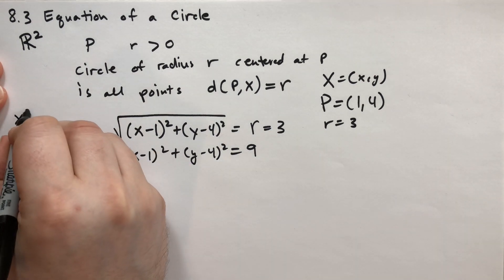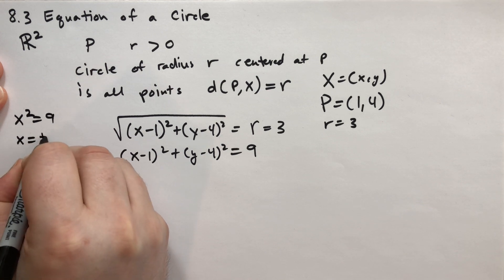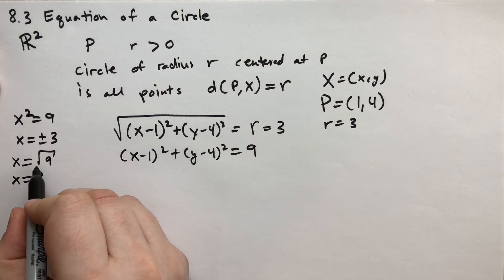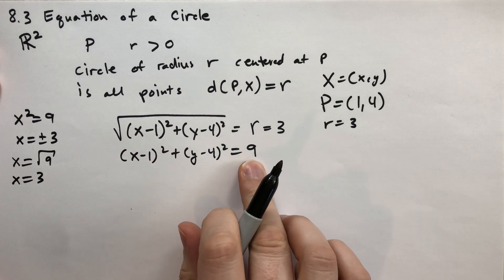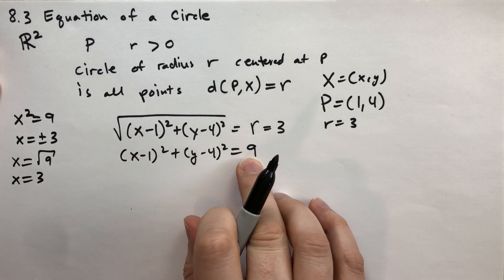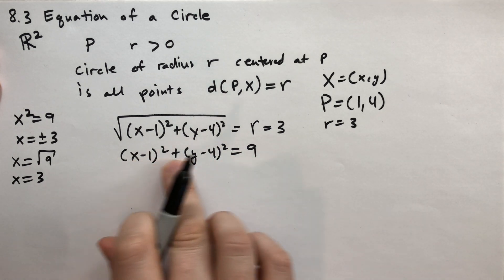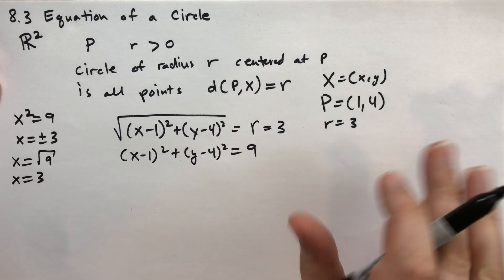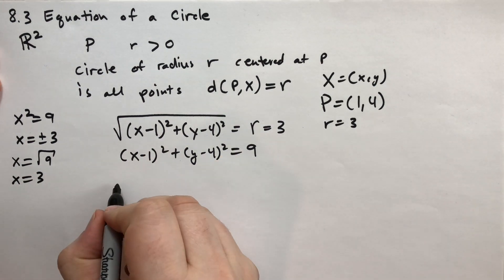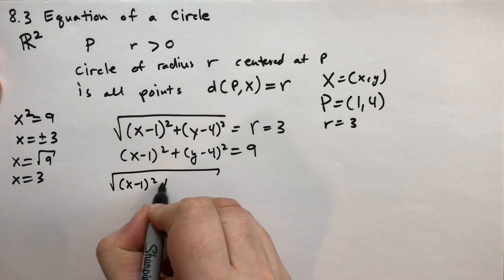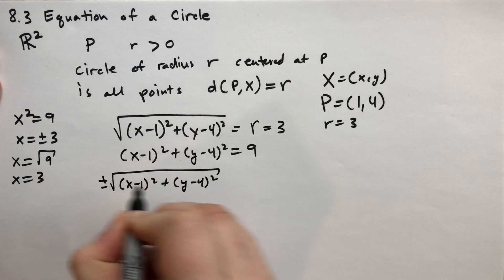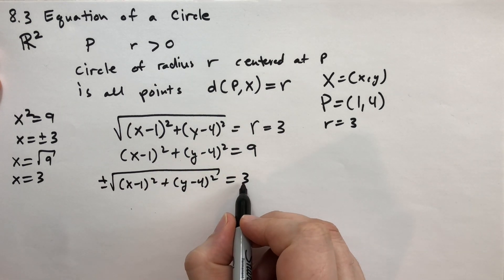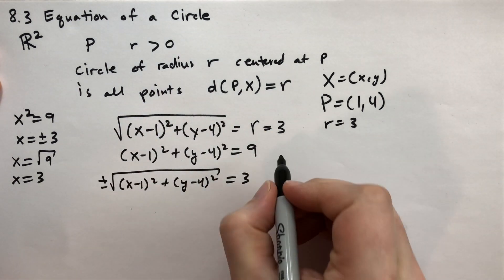Now, if we have x squared equals 9, then x could be plus or minus 3. But if we have x equals the square root of 9, then x must equal 3 — the square root sign says only take the positive. In this case, if you start with 9 and take the square root of both sides, you could get plus or minus 3, but you'll never get the sum of two positive numbers equaling a negative, so you can just drop the negative side. Both forms of the equation work.